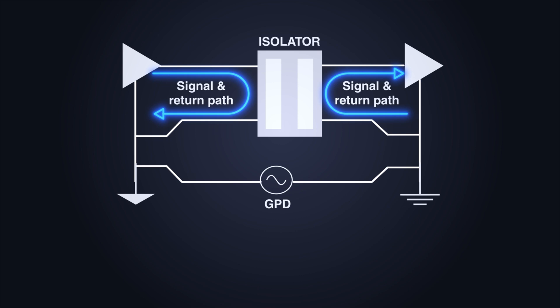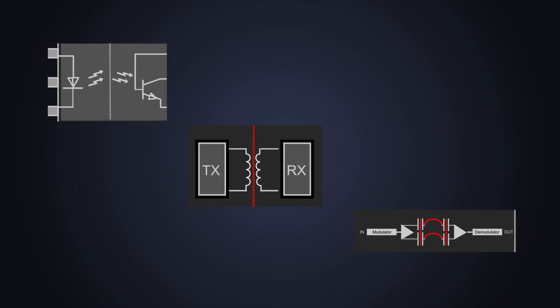We have already seen the definition and necessity of isolated MOSFET driver in our last video. There are different types of such galvanic isolation techniques. These are basically categorized in three parts which are optical, inductive and capacitive isolation.